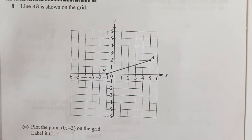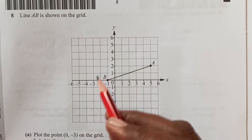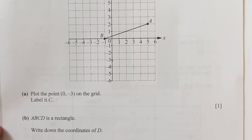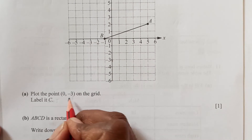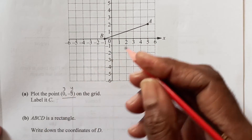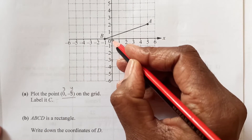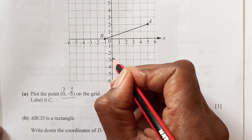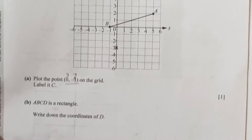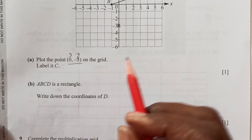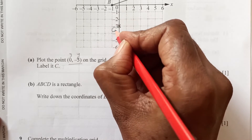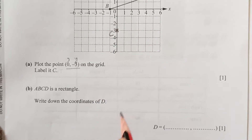Question 8. Line AB is shown on the grid. Plot point (0, −3) on the grid. x is 0 and y is negative 3, so this point is here. Now ABCD is a rectangle — we have AB, we got this point as C, and D should be somewhere.